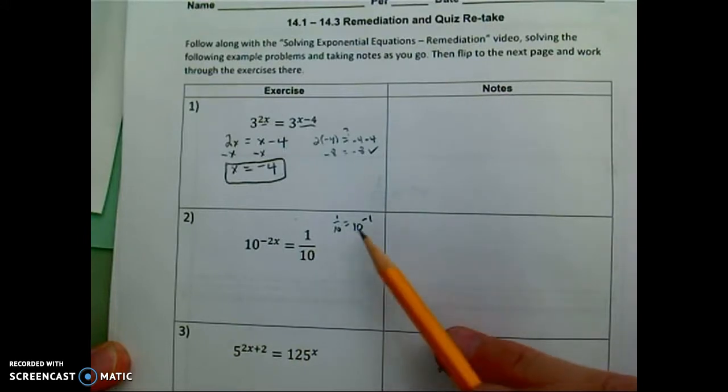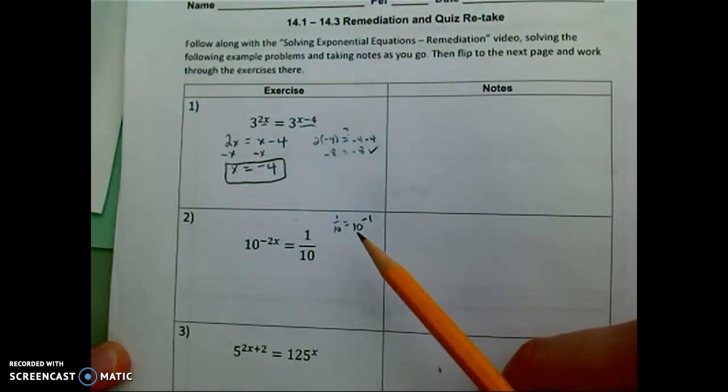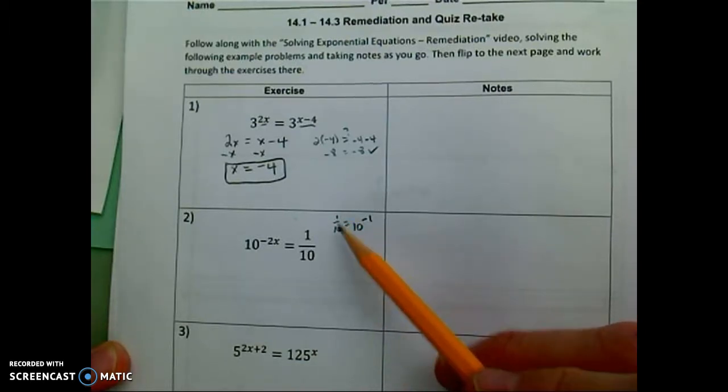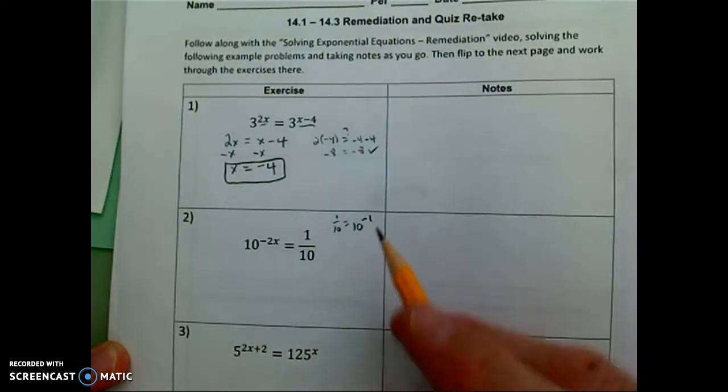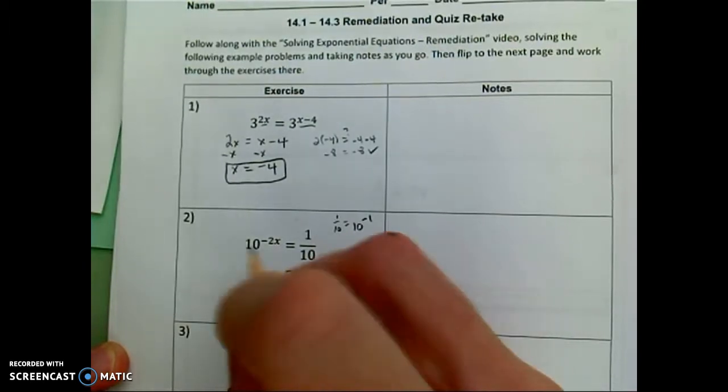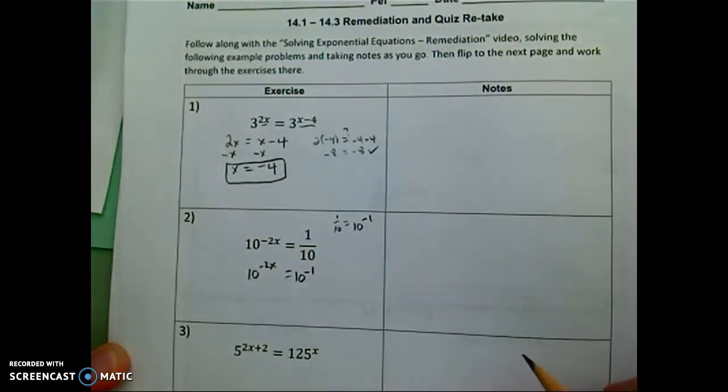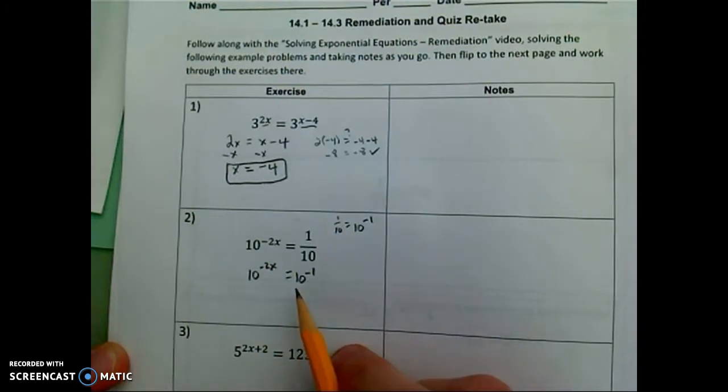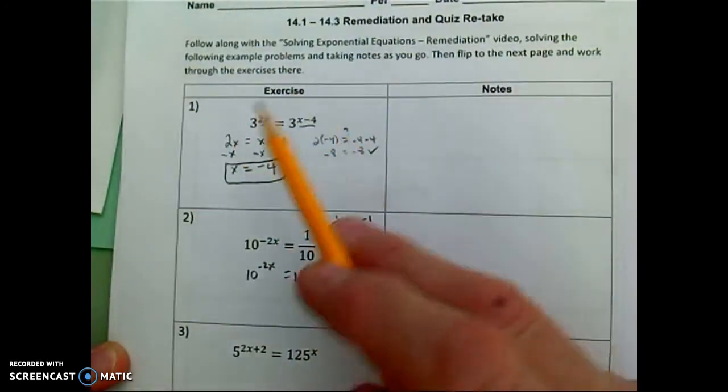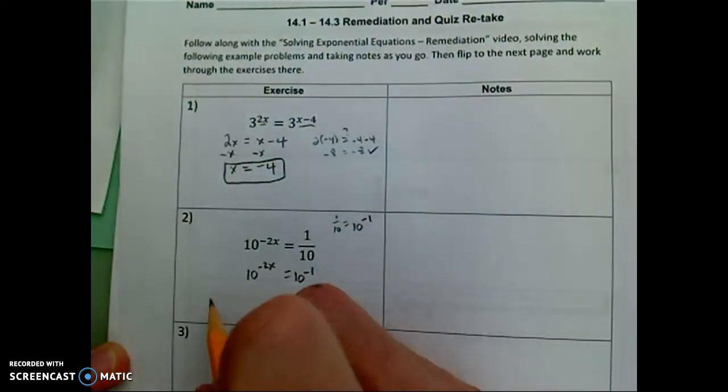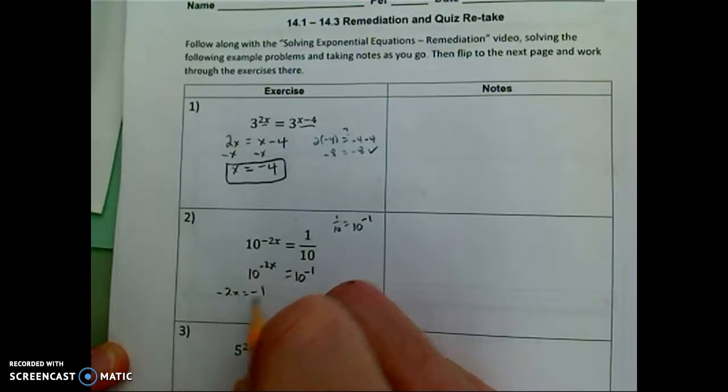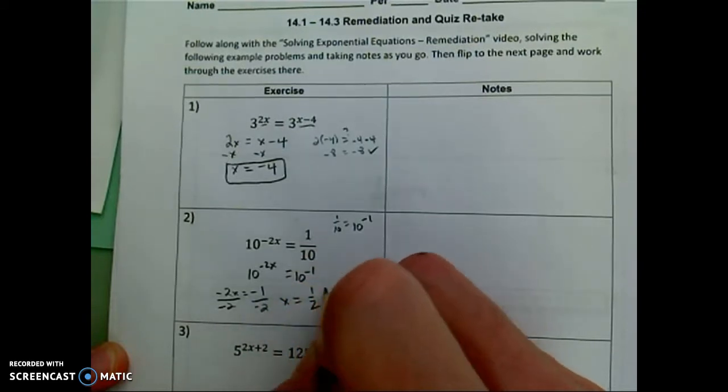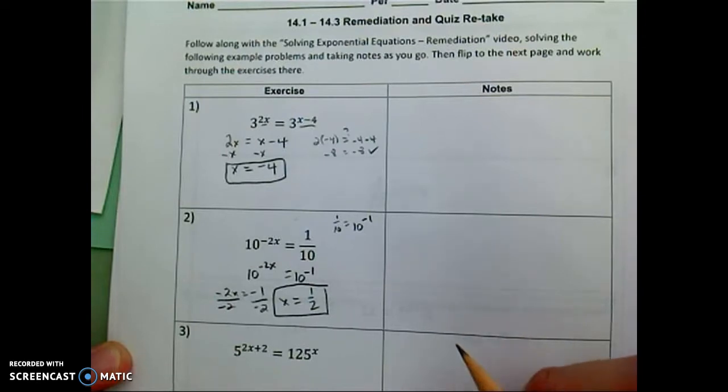1 over 10 is the same thing as 10 to the negative 1 power. If you look on your calculator many times you'll see a button that says x to the negative 1 which means inverse. So the inverse of 10 is 1 tenth. They're reciprocals. If I write the right hand side as 10 to the negative 1, now look what I've got. I've got an exponential equation with the same base. 10 to the negative 2x equals 10 to the negative 1. Now same story like I had in my first exercise. Same base means I can write the exponents equal to one another. And so x is equal to one half.